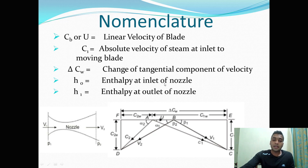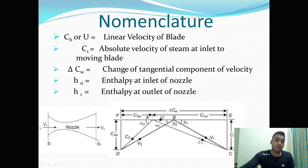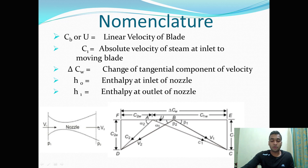H0 is enthalpy at inlet of nozzle and H1 is enthalpy at outlet of nozzle. If this is your nozzle, this is your inlet part and this is your outlet part. So H0 will be your enthalpy at inlet of nozzle and H1 will be enthalpy at outlet of nozzle.